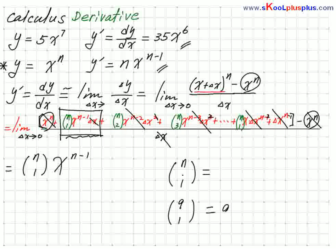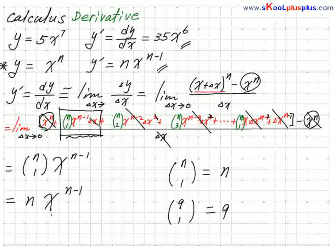So we write the result without the limit anymore: n combination 1, times x to the n minus 1. Now, n combination 1 means: how many ways to pick one element out of n? That's n. So this becomes n times x to the n minus 1 power — which is our power rule.